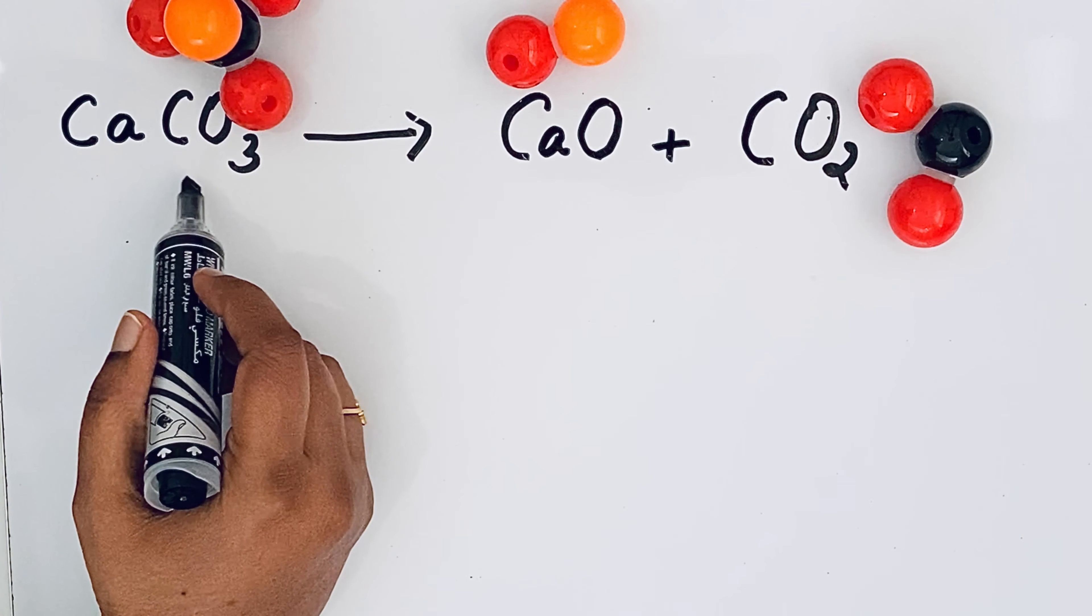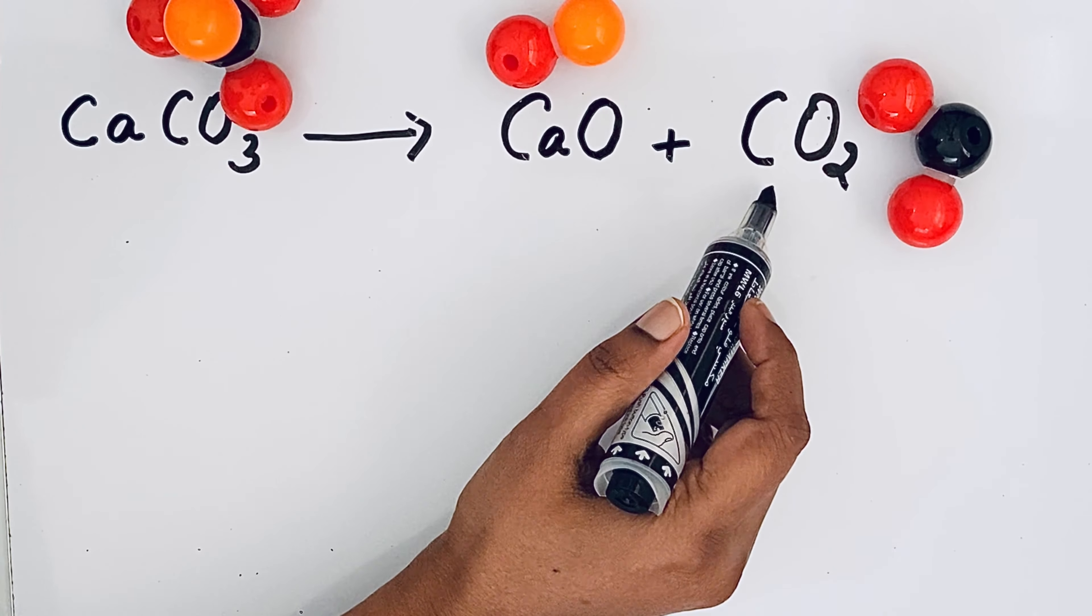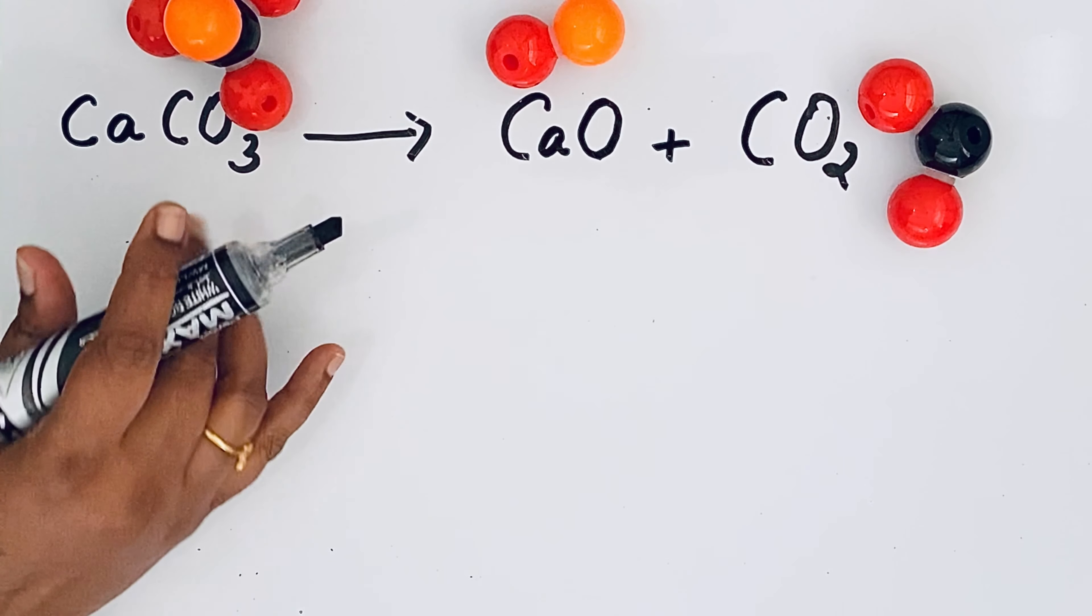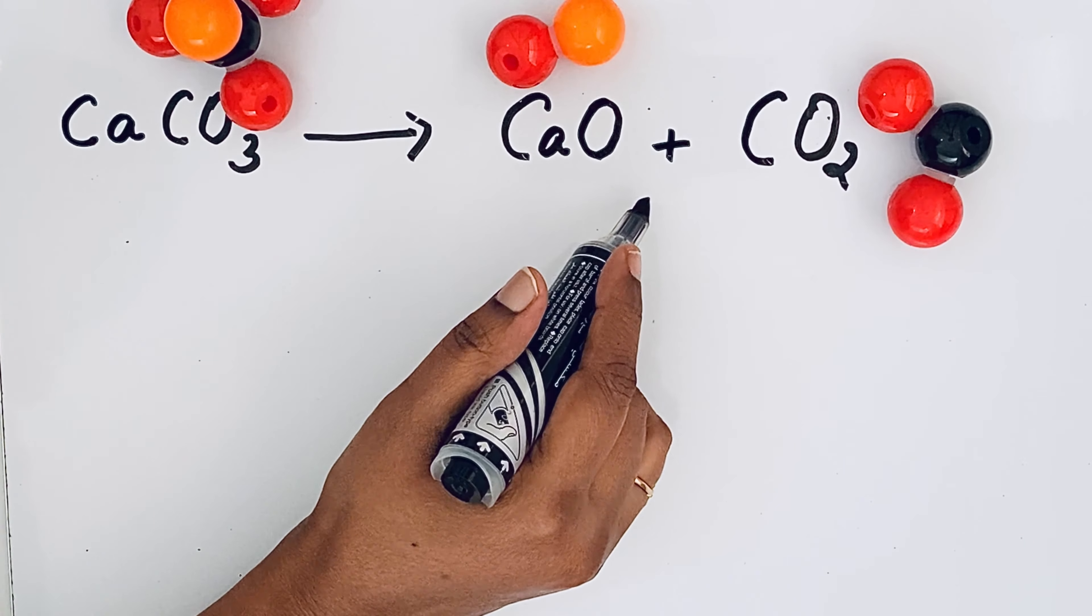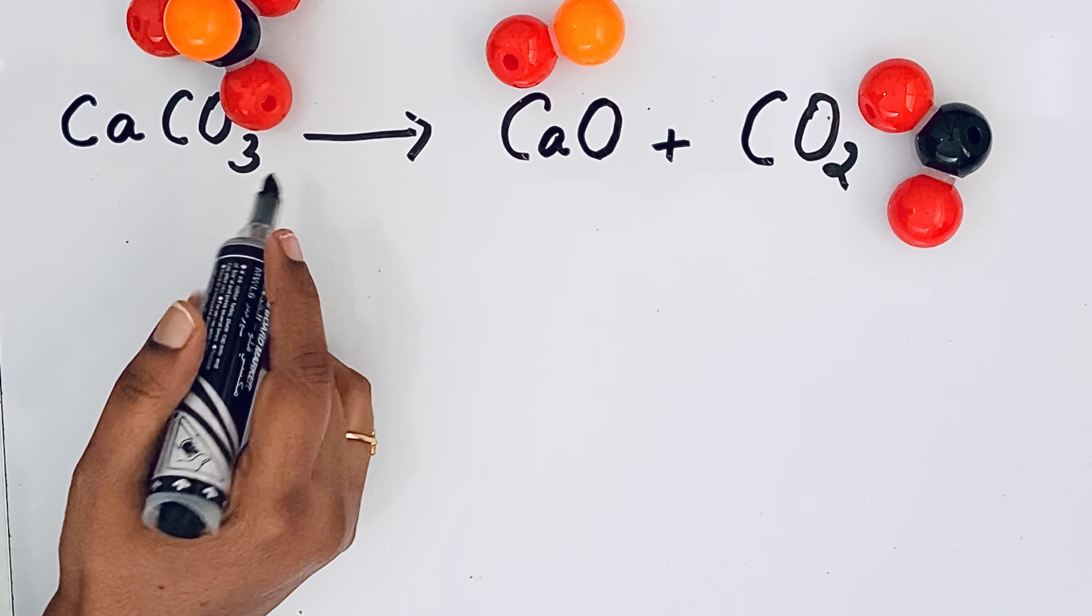This equation CaCO3 that gives CaO plus CO2 carbon dioxide. The left hand side we call reactants and the right hand side we are getting the products. So calcium carbonate CaCO3 is a reactant.